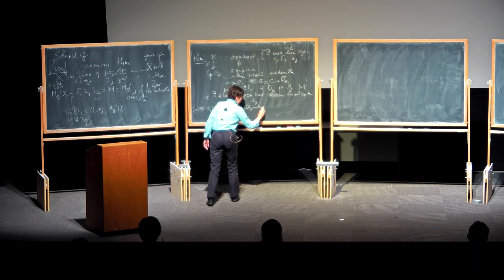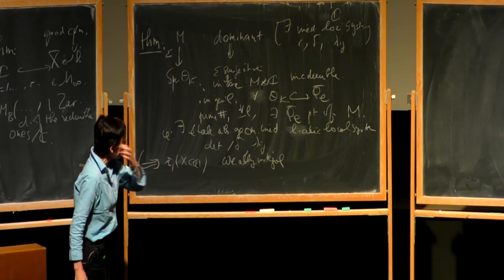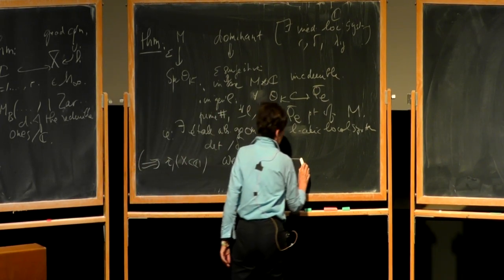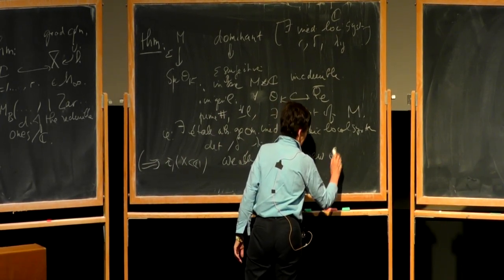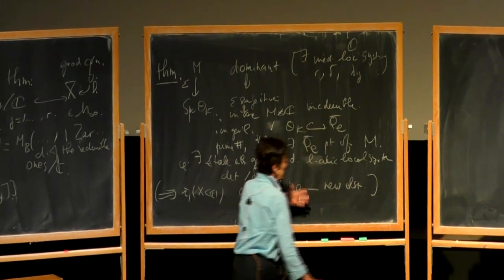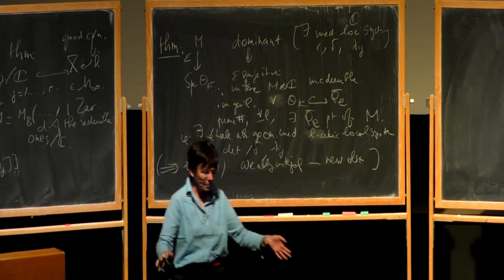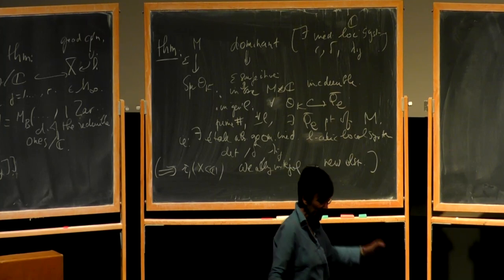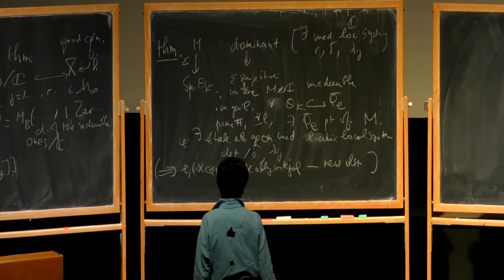I won't repeat what it means, but at any rate it gives a new obstruction — a new obstruction for a finitely presented group to be the topological fundamental group of a smooth quasi-projective variety over C.